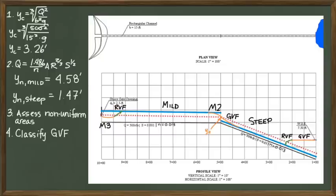Entering the steep channel, this becomes an S2 for the same reason that we called the last one an M2. Finally, just after the hydraulic jump and just before the dam, we have a flow depth that is above the normal and critical depth. This means this GVF is classified as an S1 profile.